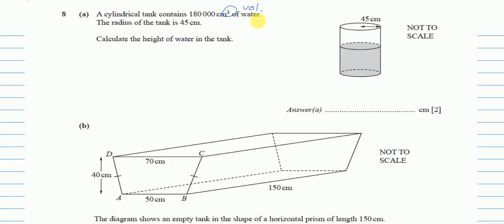Calculate the height of the water tank. If we know the area of any shape and that shape continues throughout the whole figure, then multiplying by that length gives the volume. So if I know the area of the circular base, which is π r², and this circular shape continues throughout, multiplying by the height gives the volume.